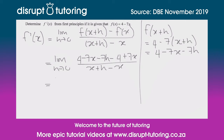Now let's simplify the top and the bottom. On the top: 4 and minus 4 cancel out, minus 7x and positive 7x cancel out, leaving us with minus 7h. On the bottom: the x's cancel out, leaving h. Dividing top by bottom, the h's cancel and we're simply left with minus 7.